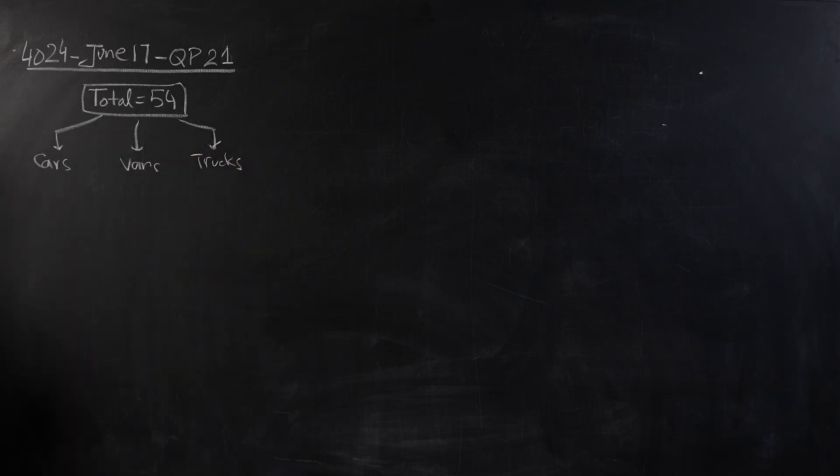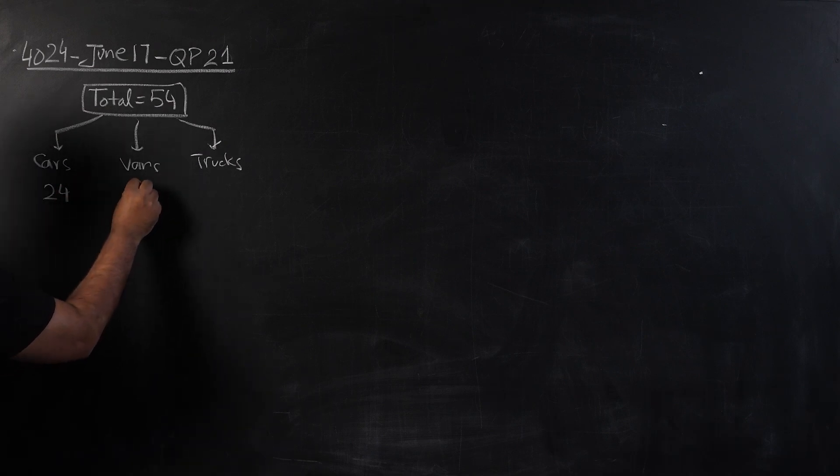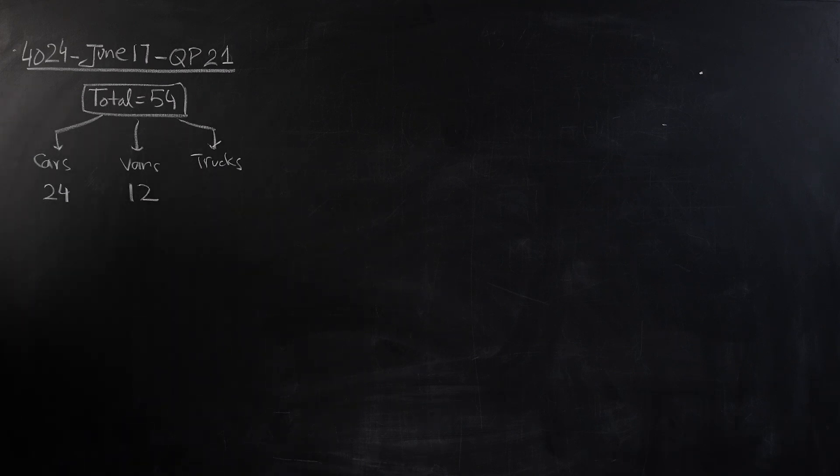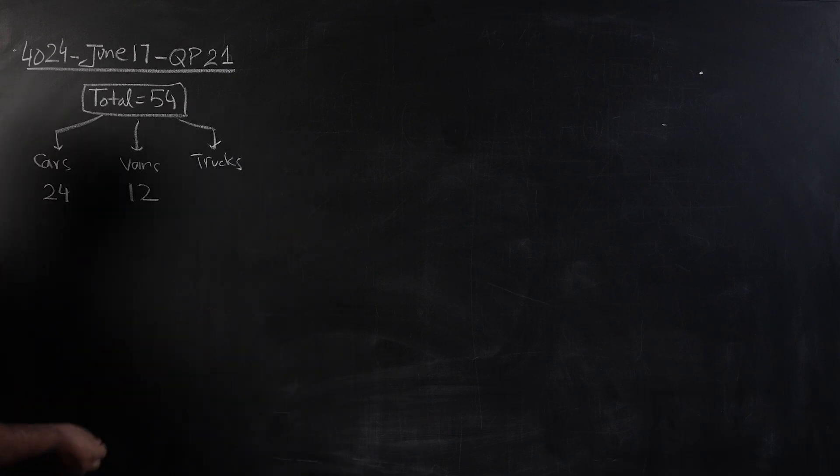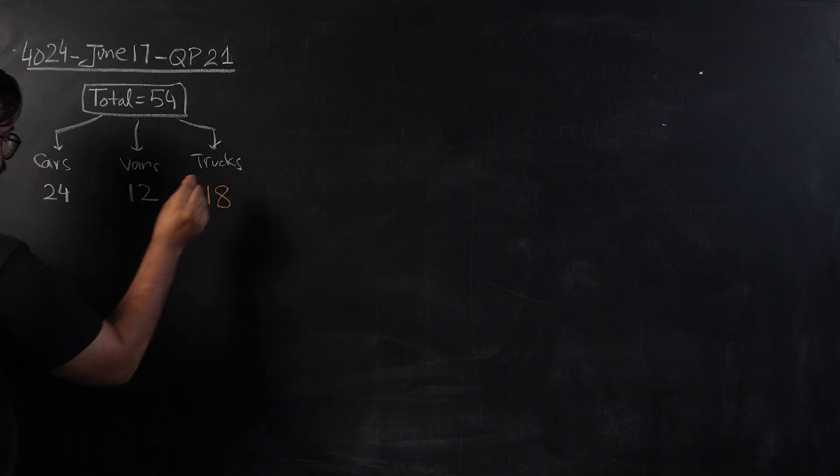At the beginning, he has 24 cars, he has 12 vans, and the rest of them are trucks. It's very simple to find the number of trucks. You're going to subtract 24 and 12 out of 54, and you'll be left with 18 trucks.